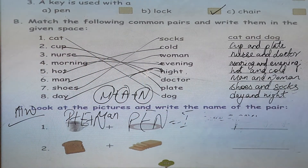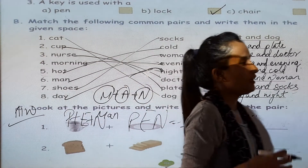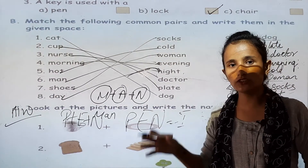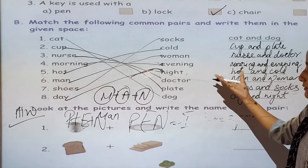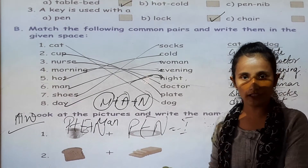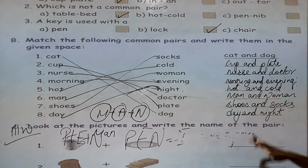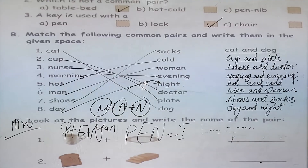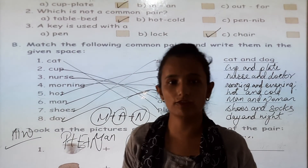You can practice at home. I am giving you extra homework that is not in your book — find any pairs of words and write them in your copy. For example: table and chair, dog and cat. Page number 38 and page number 39 — you can revise the chapter. For today, this much. Thank you. Have a good day.